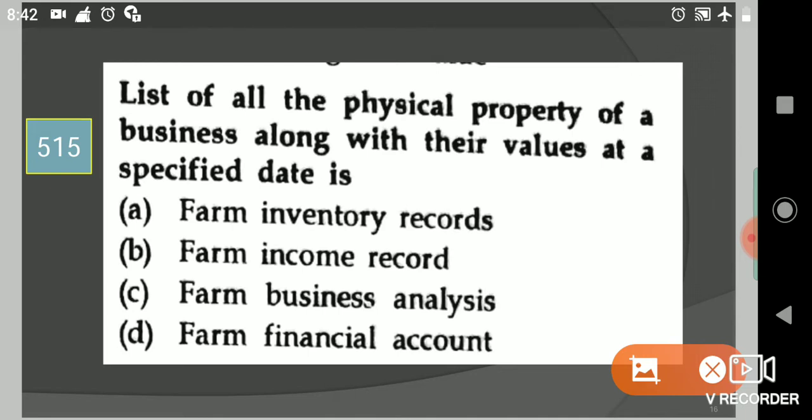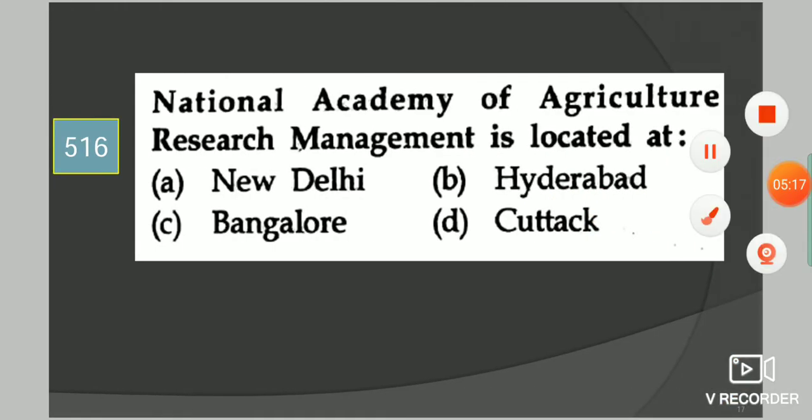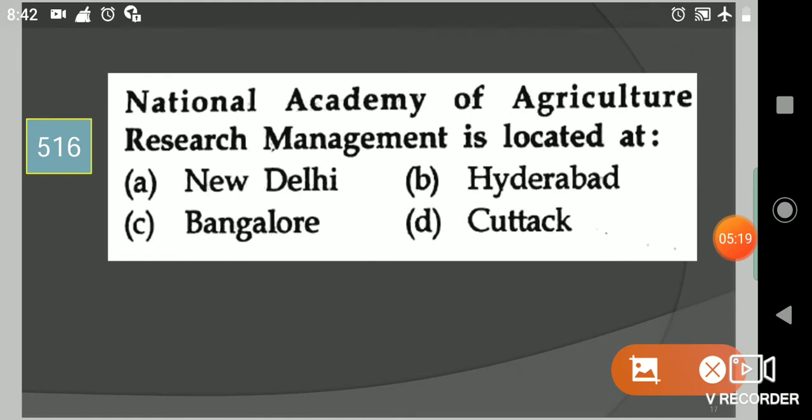Next question: National Academy of Agriculture Research Management is located at? Your options are New Delhi, Hyderabad, Bangalore, Cuttack. Your answer is option B, Hyderabad.